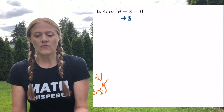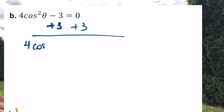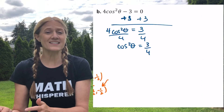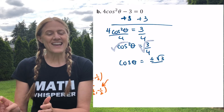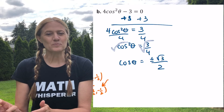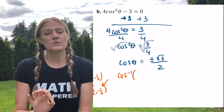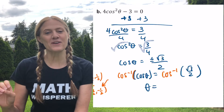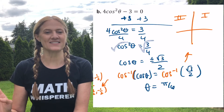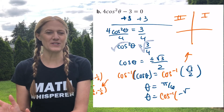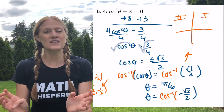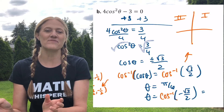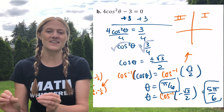4 cosine squared theta minus 3 equals 0. Add the 3, divide out the 4: cosine squared theta equals 3 fourths. Square root both sides — remember positive and negative — so cosine theta equals plus or minus root 3 over 2. Take the arc cosine of both sides. Arc cosine of root 3 over 2: that's in the first quadrant at pi over 6. Then for negative root 3 over 2: take arc cosine, look at quadrant 2, and that occurs at 5 pi over 6. So theta equals pi over 6 and 5 pi over 6.